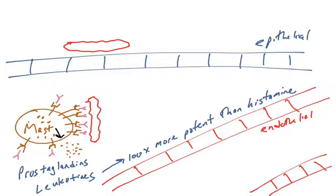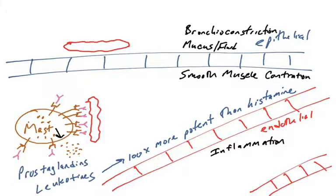So leukotrienes are small molecules that are similar in function to histamine. They're in fact 100 times more potent than histamine. So they have receptors that are similarly found where you find histamine receptors. So they're going to cause increased vascular permeability, they'll cause smooth muscle contraction, they'll cause mucus and fluid to be released into various tubes. So leukotrienes, just like histamine, but they are made and released later, and they are more potent than histamine.